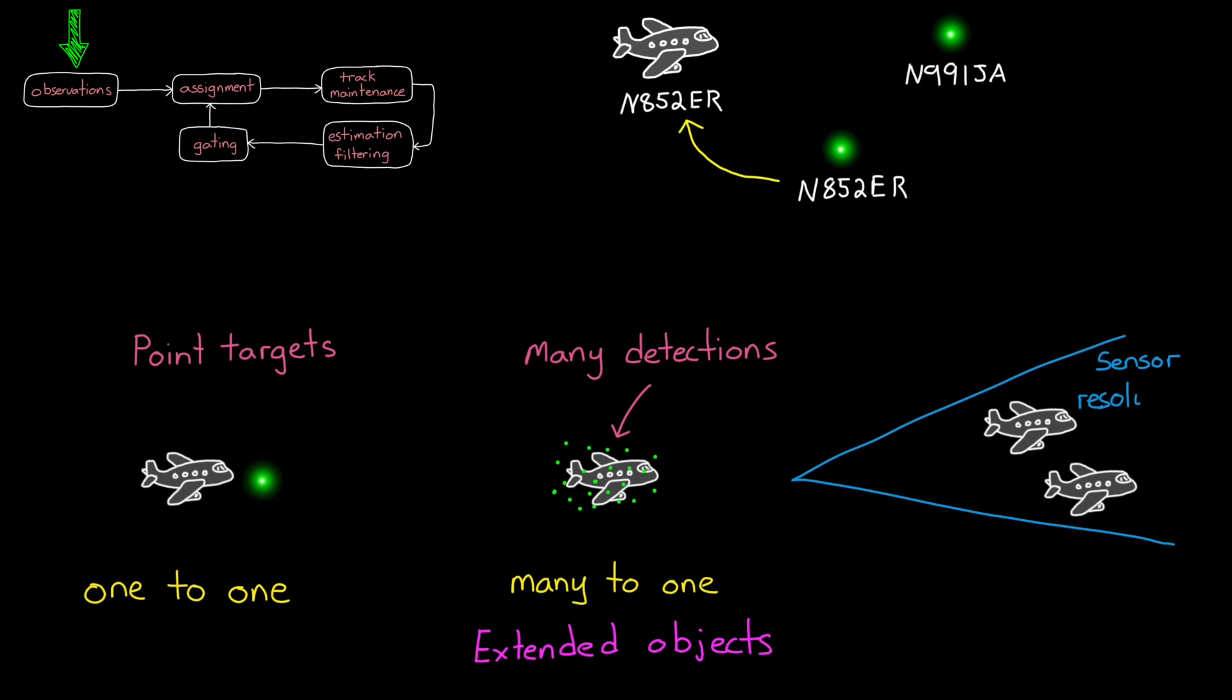Also, if the resolution of the sensor is low, then it's possible that two objects may exist within a single detection. In this case, both objects have been observed, so we don't want to stop tracking either of them, but they show up as only a single detection. So our track deletion algorithm will have to handle these situations.